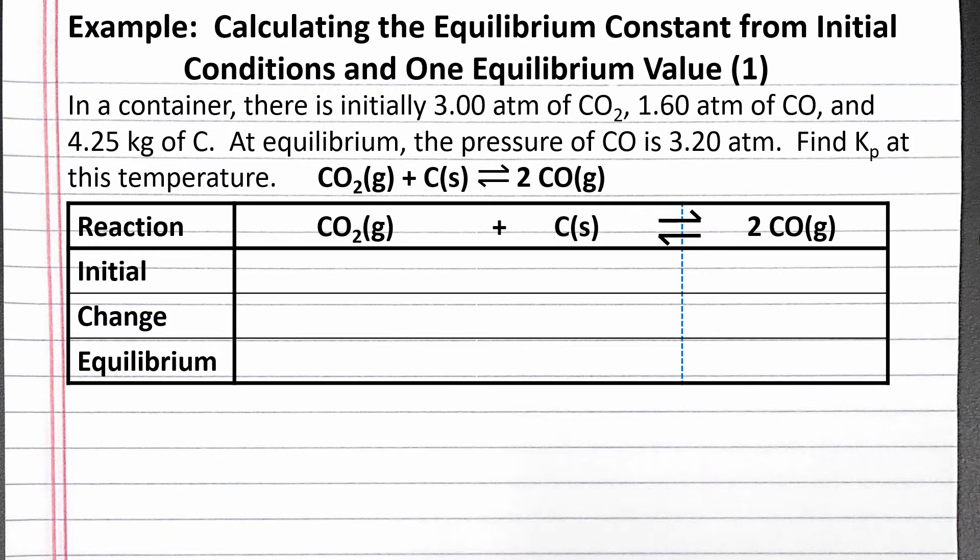We're given the initial pressure of carbon monoxide and carbon dioxide. We don't need to keep track of solid carbon because pure solids do not show up in the equilibrium constant expression. We're also given the equilibrium pressure of carbon monoxide.